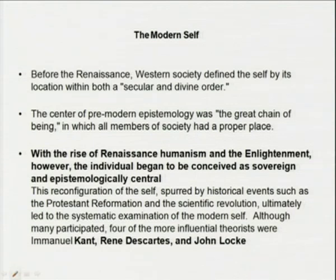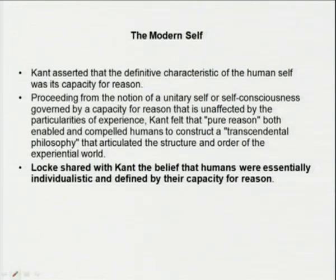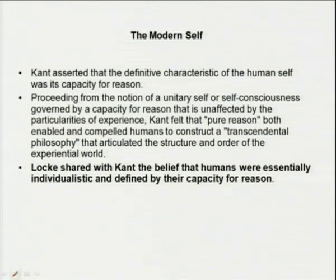This reconfiguration of the self, spurred by historical events such as the Protestant Reformation and the scientific revolution, ultimately led to the systematic examination of the modern self. Four of the more influential theorists were Kant, René Descartes, and John Locke. Kant asserted that the definitive characteristic of the human self was its capacity to reason — proceeding from the notion of a unitary self-consciousness governed by the capacity for reason, unaffected by the particularities of experience. Kant felt that pure reason both enabled and compelled humans to construct a transcendental philosophy that articulated the structure and order of the experiential world.